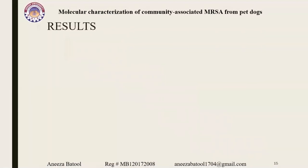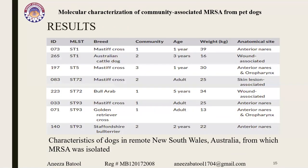Results: characterization of dogs in remote New South Wales, Australia from which MRSA was isolated. A total of 383 pets — 303 dogs and 80 cats — were sampled from six communities in western New South Wales. Dogs were mostly mixed breeds and cats were domestic short-haired or long-haired. Dog age ranged from 6 weeks to 15 years and weight varied widely. Cats were mostly young. MRSA was isolated from the anterior nares of five dogs, from the oropharynx of two dogs; two dogs had wound-associated MRSA and one dog had skin lesion-associated MRSA. MRSA was not isolated from any cat.